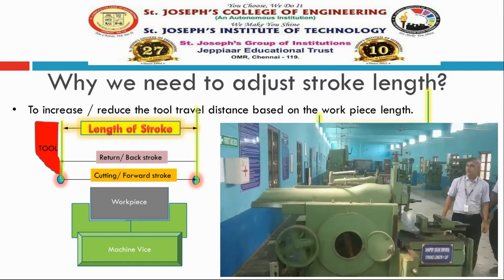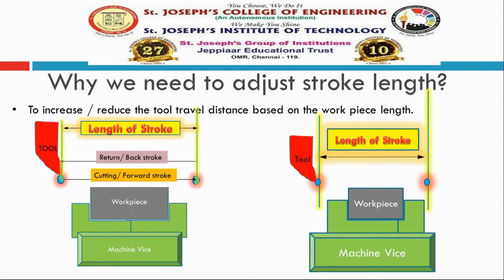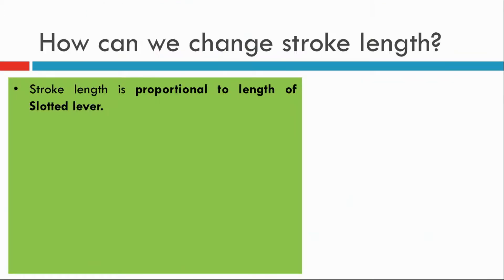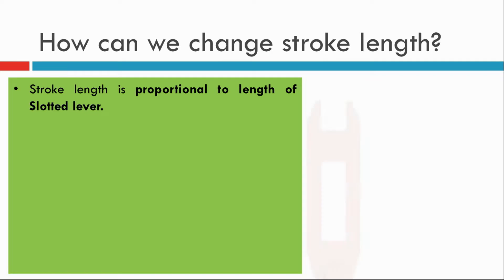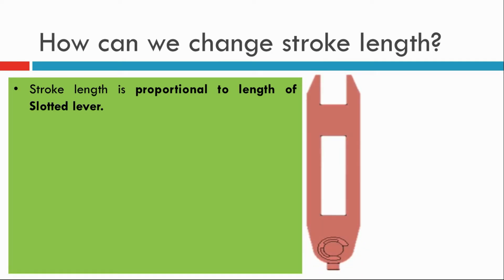The stroke length can be changed by the following methods. The first method: stroke length is proportional to the length of the slotted lever. This is the slotted lever. By increasing or decreasing the length of the slotted lever, we can change the stroke length of the ram. Actually, this is done while designing and manufacturing the machine itself.